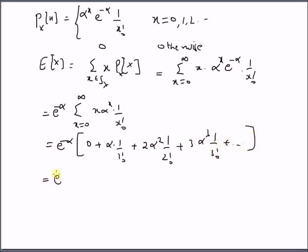So we have e^(-α) times α times [1 + α/1! + α^2/2! + α^3/3! + ...] by canceling the coefficients and factoring out α.